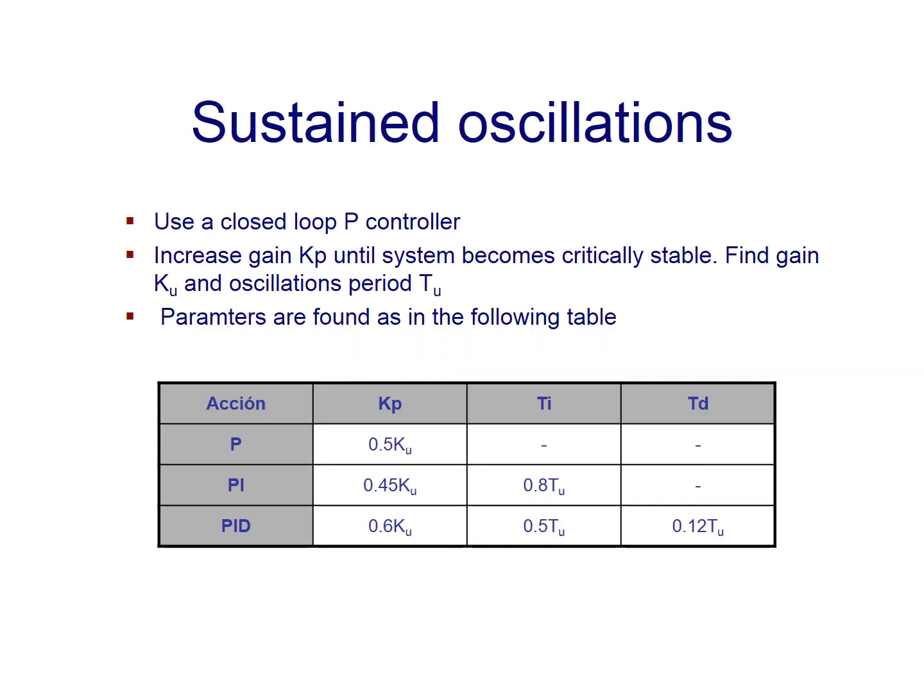The other method by Ziegler-Nichols is called sustained oscillations. And here, what we're going to do is to apply some proportional controller to a closed loop, and we're going to set it into a closed loop system, considering the process. Next thing you're going to do is to increase the gain of the proportional controller until the system becomes critically stable. That is, we're going to have sustained oscillations. And with this, at this value, we take note of the gain, which is going to be called Ku, and the oscillations period, which is going to be Tu.